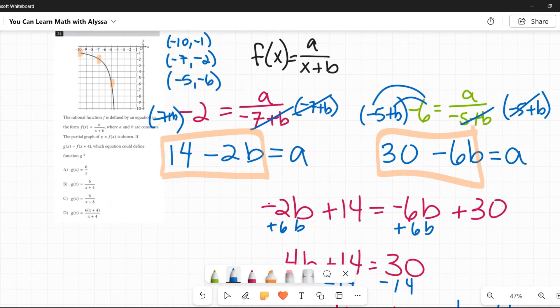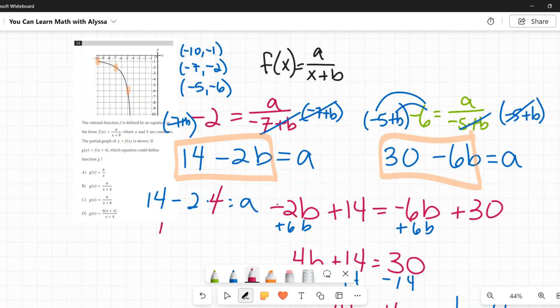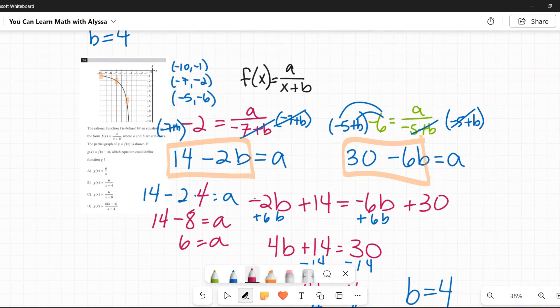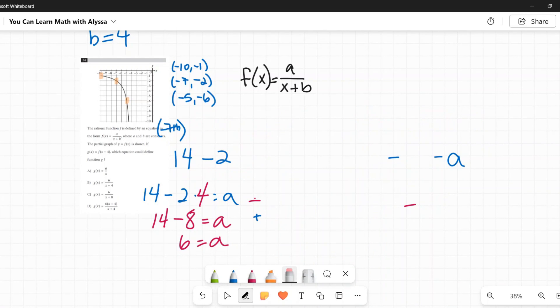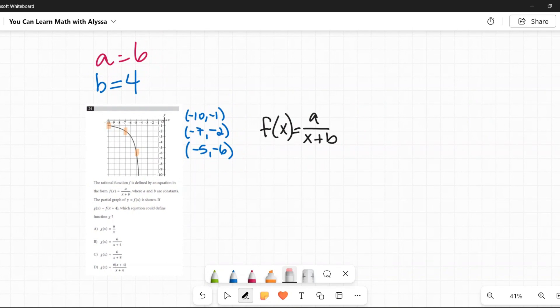Now I'm going to write this right up here. b equals 4. Okay. Now I can use either one of these two equations to solve for a. I'm going to use this one over here. So 14 minus 2 times b equals a. I now know that b is 4. 14 minus 2 times 4 is 8 equals a. 14 minus 8 is 6. a is 6. All right. Now I know a is 6 and b is 4. I am going to erase all this. All of that just to find out that a was 6 and b was 4.